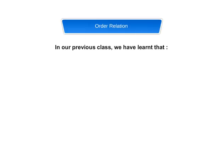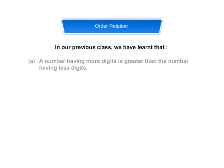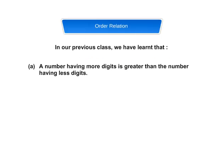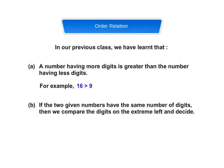In our previous class, we have learnt that: A. A number having more digits is greater than the number having fewer digits. For example, 16 is greater than 9. B. If the two given numbers have the same number of digits, then we compare the digits on the extreme left and decide.